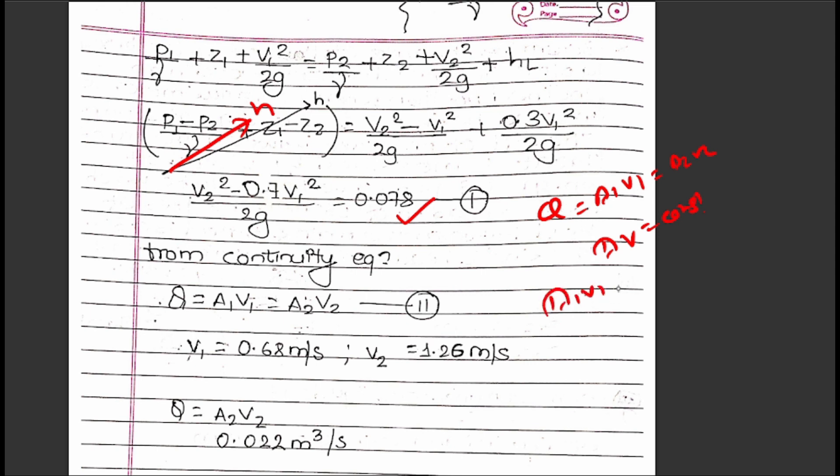Therefore, (π/4)(0.3)²V₁ = (π/4)(0.15)²V₂. Solving these equations together gives V₁ = 0.68 m/s and V₂ = 1.26 m/s.